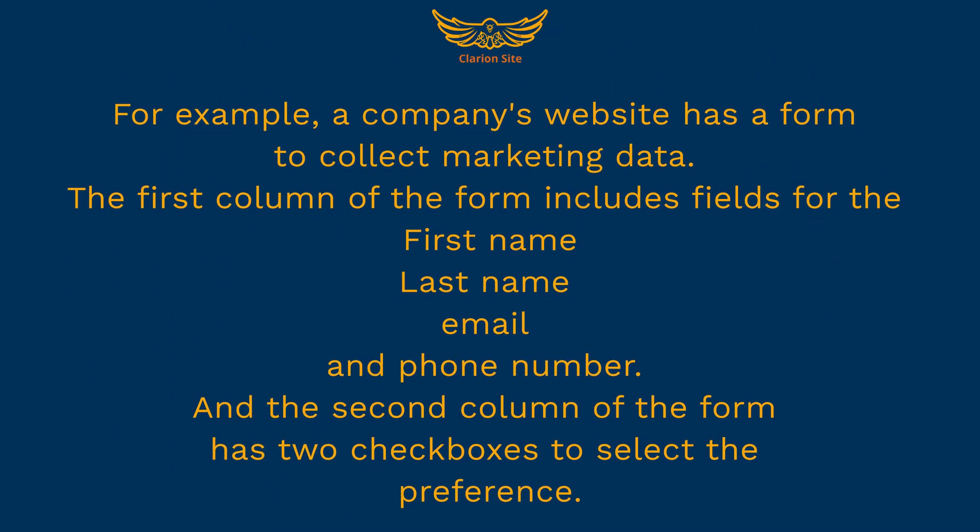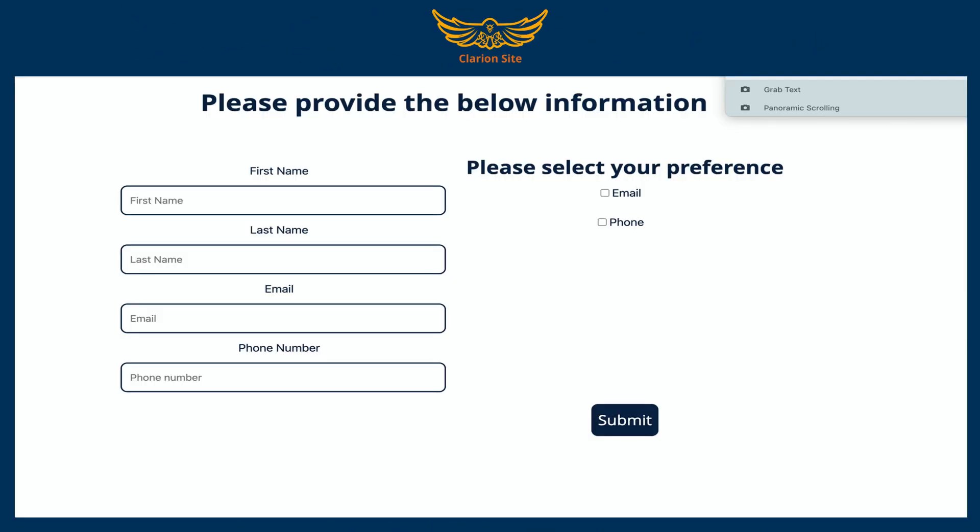For example, a company's website has a form to collect marketing data. The first column of the form includes fields for first name, last name, email, and phone number. The second column of the form has two checkboxes to select the preference. A screenshot shows the layout of the form to test the focus order.